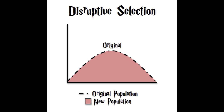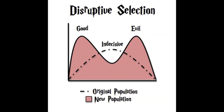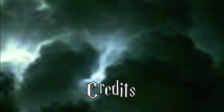Disruptive selection is the mode in which extreme phenotypes are favored over intermediate phenotypes within a population. Natural selection selects only for the extreme traits over many generations, and individuals exhibiting intermediate traits will not survive and reproduce. In this case, the phenotype of indecisiveness is selected against, because it is advantageous to be either good or evil to survive in the magical world. Good wizards reproduce with good wizards and evil with evil; offspring with intermediate traits have lower fitness, thus accentuating the extreme phenotypes.